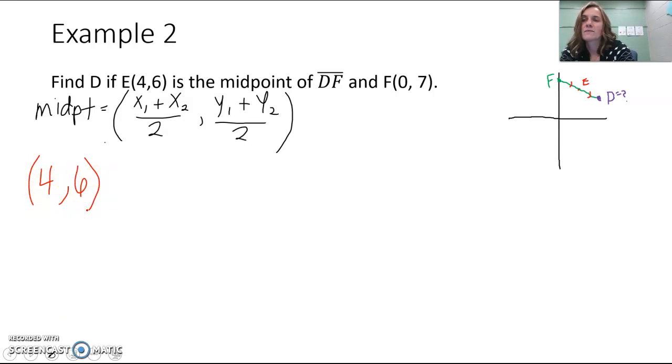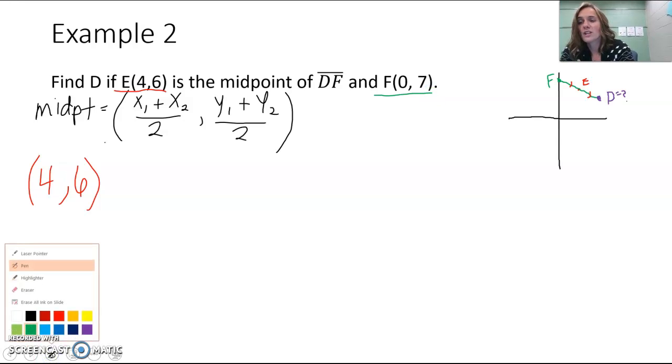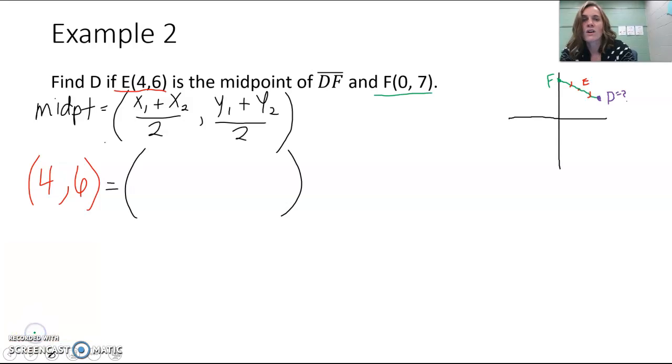That's E, our midpoint. And then F(0,7) that we're given goes into that. F could be like our x₁,y₁, and then that means that D, what we're trying to find, would be like our x₂,y₂.